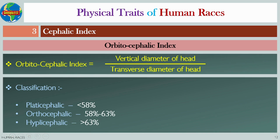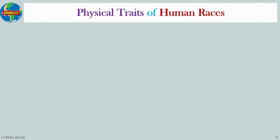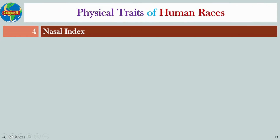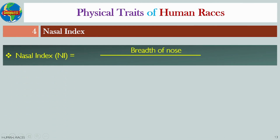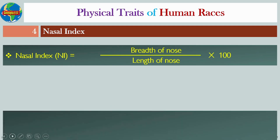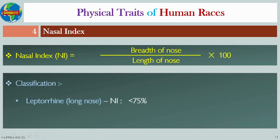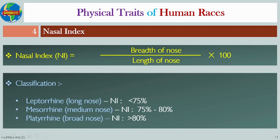Number four: Nasal index. Nasal index (NI) can be defined as the ratio between the breadth of the nose to the length of the nose. There are three types of nasal index: number one, leptorrhine, that is long nose; number two, mesorhine, that is medium nose; and number three, platyrrhine, that means broad nose.